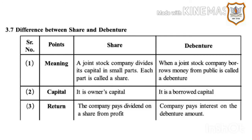First point — Meaning: A joint stock company divides its capital into small parts; each part is called a share. A debenture is when a joint stock company borrows money from the public. Second point — Capital: In a share, it is owner's capital; in a debenture, it is borrowed capital.